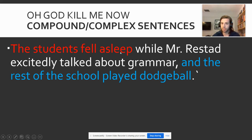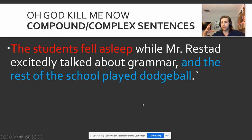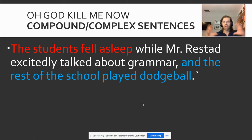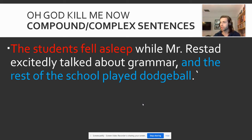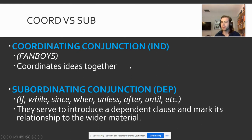For example: 'The students fell asleep' — independent, can stand on its own. 'While Mr. Restad excitedly talked about grammar' — that can't stand on its own, so that's a dependent clause. 'And the rest of the school played dodgeball' — that is an independent clause. So I have two independents and one dependent. You can see how sentences get really, really long as people's writing becomes more and more complex — which is a great thing. You're able to talk about a lot more information, string it together in a grammatically correct way, instead of having a bunch of short choppy sentences. The general rule is you're never going to have more than two independent clauses in a sentence. Anything more than that is usually what we consider a run-on.